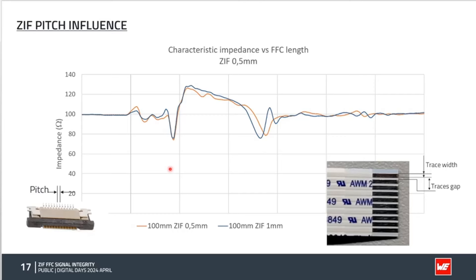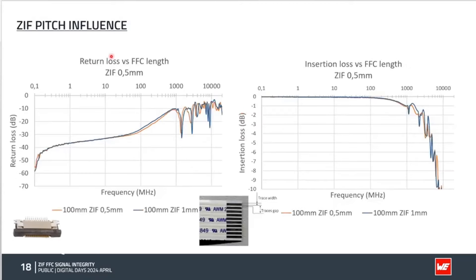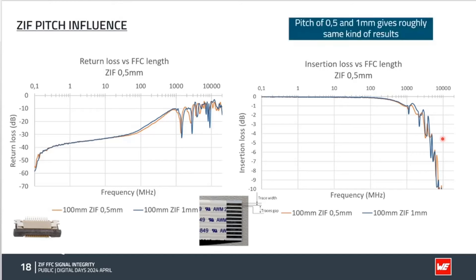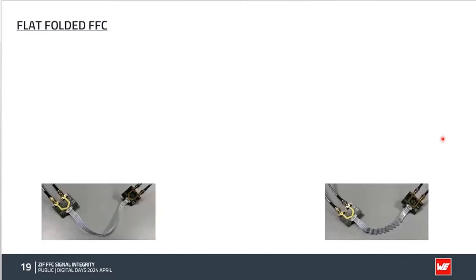Regarding the influence of pitch: comparing 0.5 mm and 1 mm pitch, the impedance curves are very close, and both return loss and insertion loss curves are nearly identical. The conclusion is simple — pitch makes no difference for signal integrity. You choose the pitch based on mechanical requirements for your application, not for signal integrity reasons.